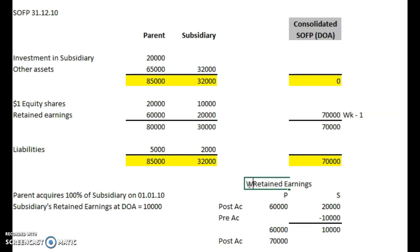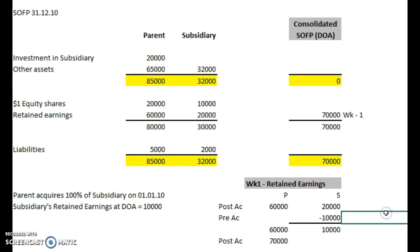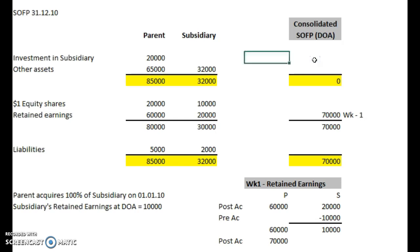So we can see what we're doing — working one: retained earnings. And then the rest of the consolidation is as previously.